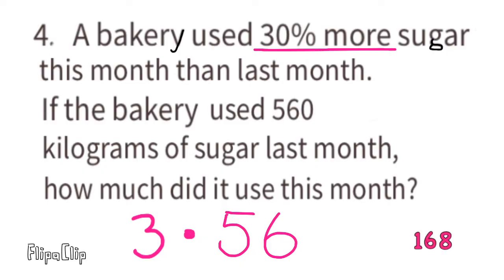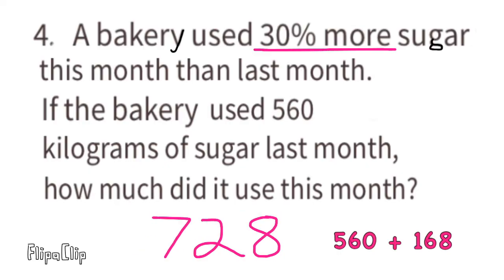Since they used 30 percent more sugar this month than last month, we add 168 to 560, which equals 728. This month the bakery used 728 kilograms of sugar, which is 30 percent more than last month.